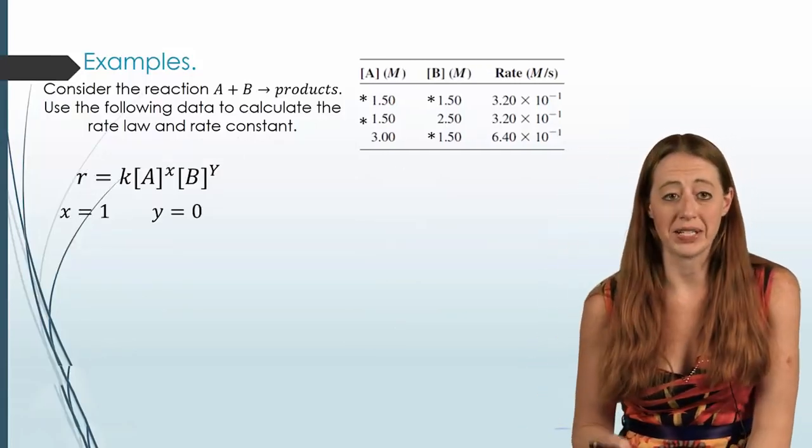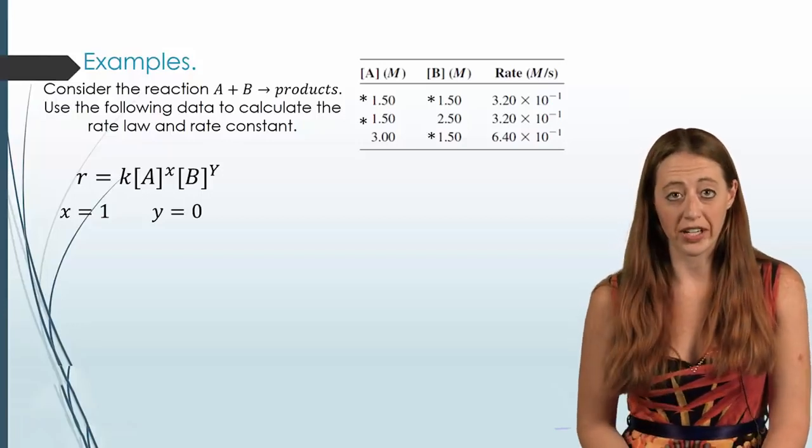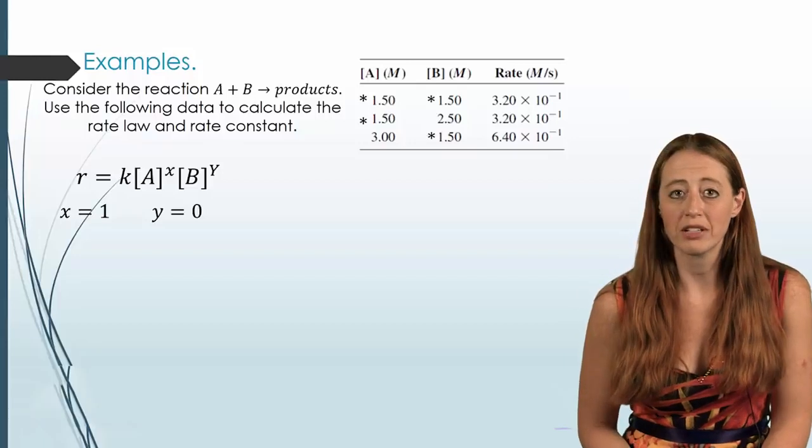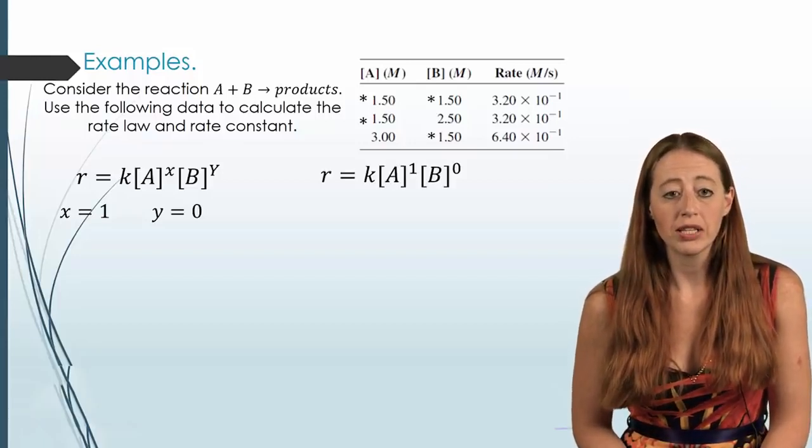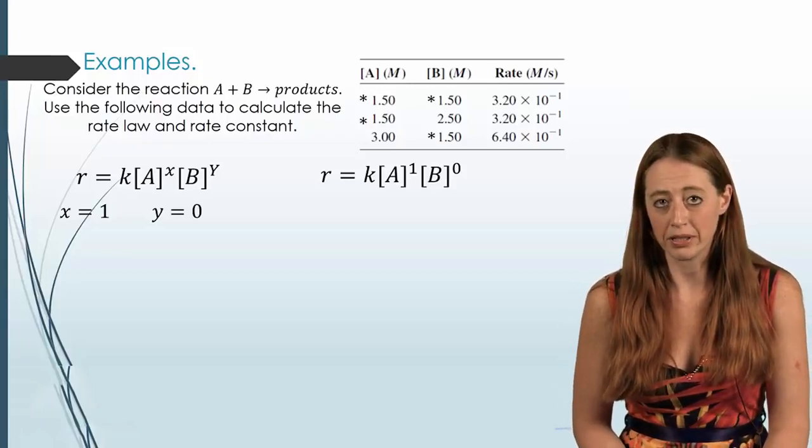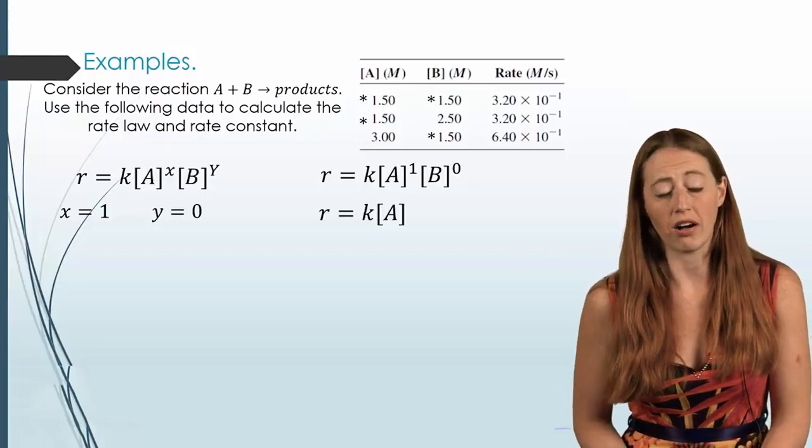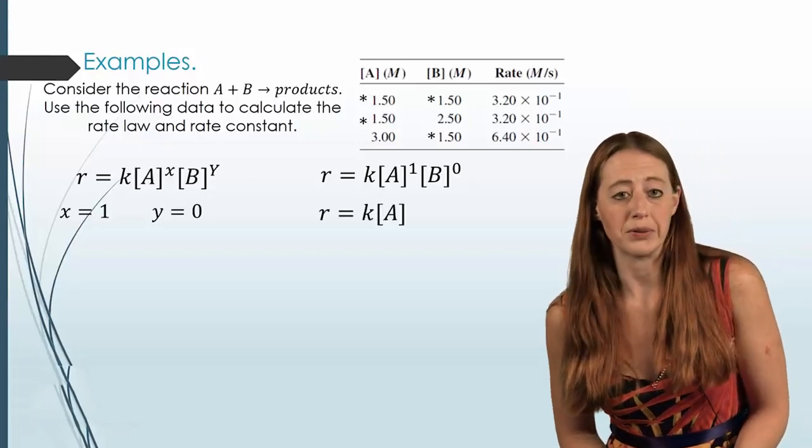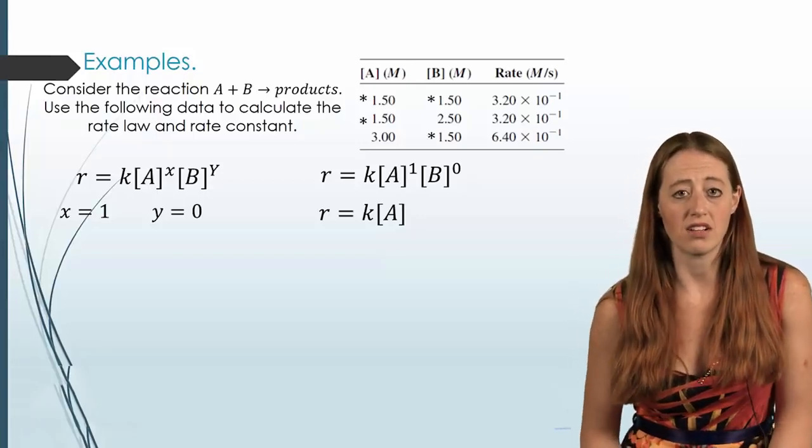So now that we have these exponents, we can do something that we weren't able to do before. We're able to actually solve for K. Instead of just leaving it as a constant, it's much better if we can actually solve for a number here. So if we look at our rate law, and now we can actually go ahead and say that B to the zeroth power, since that's just going to equal one, and doesn't actually factor into rate at all, can just become R equals K times the concentration of A. And we can use this to solve for K.